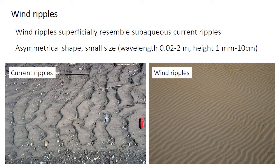Wind movement of sediment can produce ripples that somewhat resemble the subaqueous current ripples found in rivers. Wind ripples also generally have an asymmetrical shape and small size — typically a few millimeters in height and spaced a few tens of centimeters apart. They may have a somewhat more rounded or flatter crest, but there are a lot of similarities. In the case of wind ripples, grain impacts nudge larger particles along by intermittent rolling or sliding and may eject other grains from the crest. So this type of wind ripple is often called a ballistic ripple or an impact ripple, because the ballistic impacts of grains are so important in forming them.